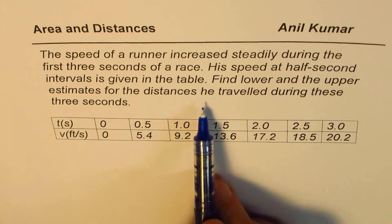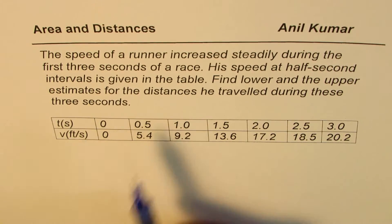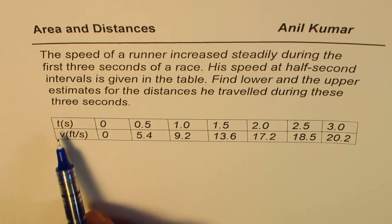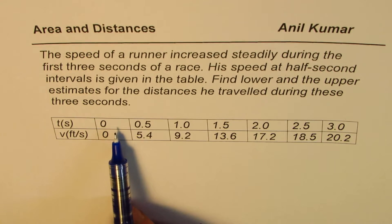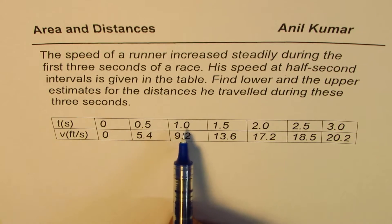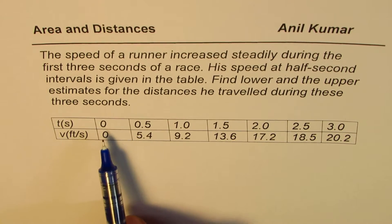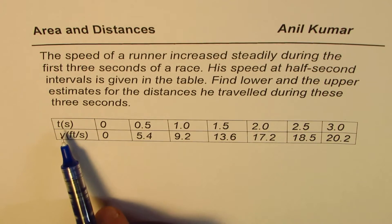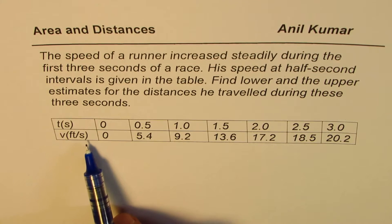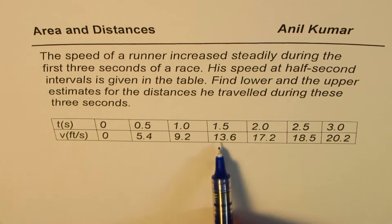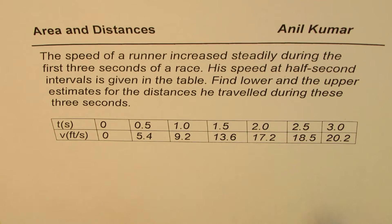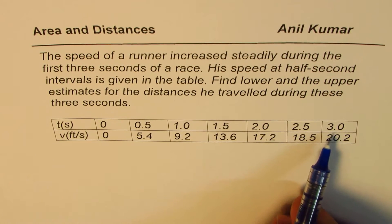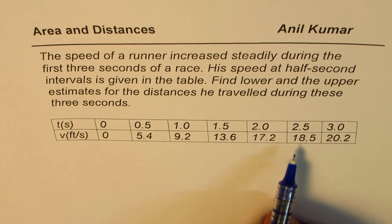The table has values for time in seconds at every half-second interval: 0, 0.5, 1, 1.5, 2, 2.5, and 3. The corresponding velocity in feet per second is 0, 5.4, 9.2, 13.6, 17.2, 18.5, and 20.2. You need to find the distance covered during this period of three seconds. You can always pause the video and answer the question.